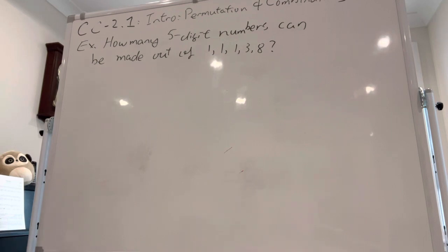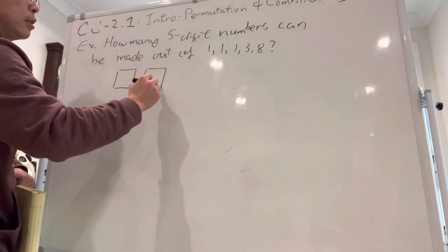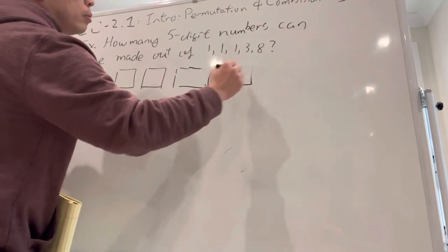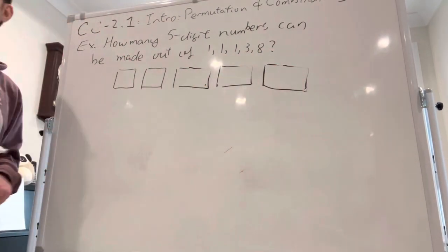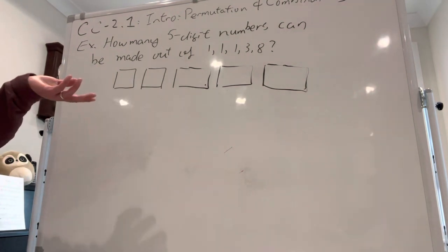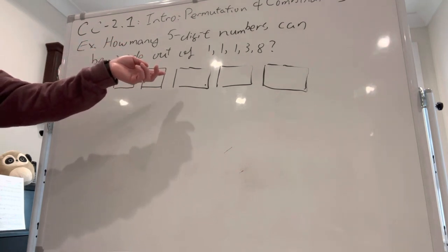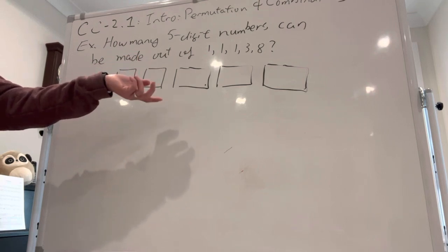One way to think about it is a five-digit number looks like this—there are five spots. For us to make a five-digit number out of these five digits, basically you need to pick two seats for the digit 3 and 8, and then the 1, 1, 1 will fill into the remaining three spaces.